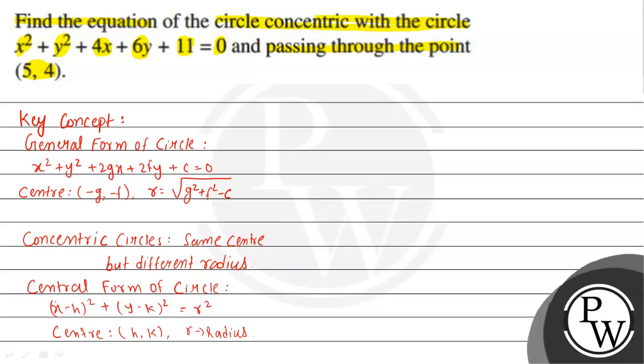So here we have all these concepts used to solve this question. The given equation is x² + y² + 4x + 6y + 11 = 0. Comparing with general form, we will get: